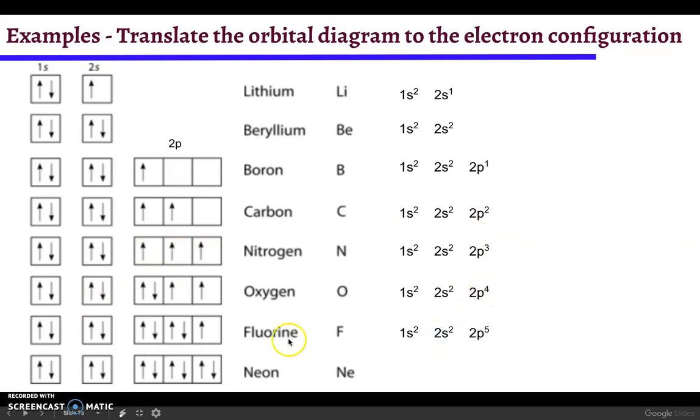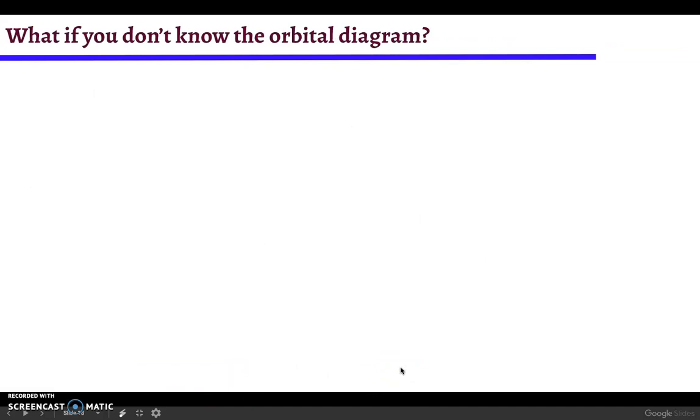Oxygen should be 2p4. Fluorine has five electrons, so it'll be 2p5. Neon will be 2p6 because there's six electrons in there. So what if you don't already know the orbital diagram? Then how do you come up with the electron configuration?